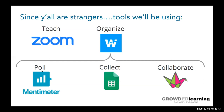The tools being used today: Mentimeter for polling, a shared Google Sheet for collecting information about tools participants are using, and a Padlet for collaboration. If you prefer to be a passive observer and just use the chat, that's fine — but participation is encouraged, especially for the poll, so we can see how these tools work and discuss how they might work with your students.